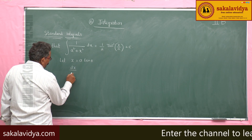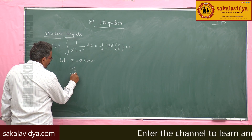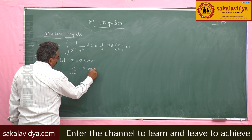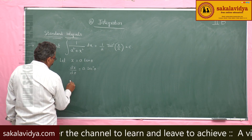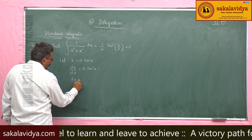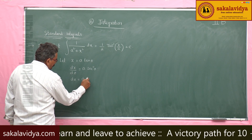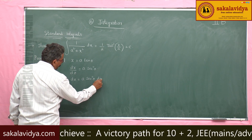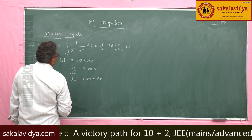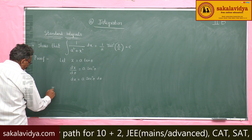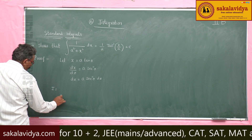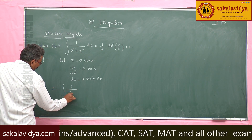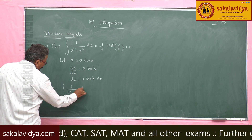So dx/dθ — the derivative of a·tan θ is a·sec²θ, so dx = a·sec²θ dθ. Now the integral becomes I = ∫1/(a² + x²) dx.